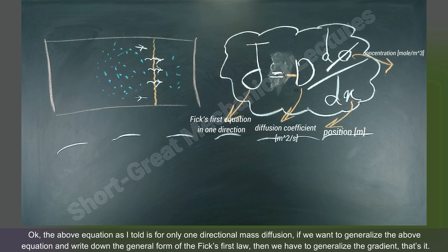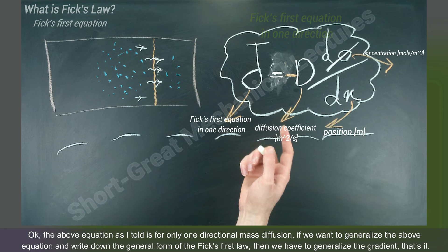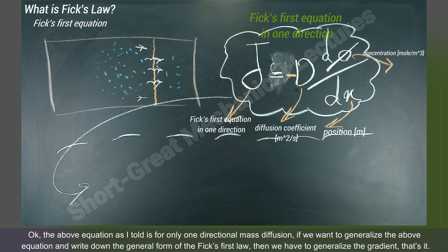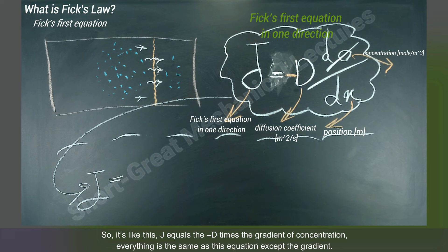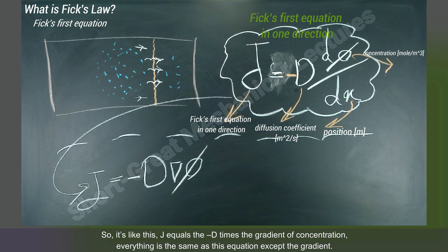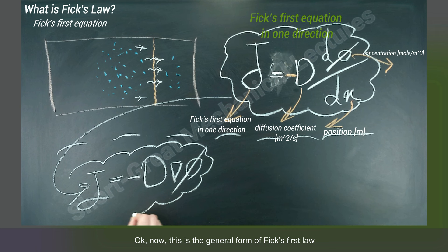The above equation is for one-directional mass diffusion only. If you want to generalize it and write down the vector form of Fick's first law, we generalize the gradient. So it becomes: J equals negative D times the gradient of the concentration. Everything is the same as the one-directional equation except the gradient. This is the general form of Fick's first law.